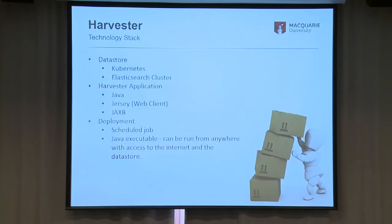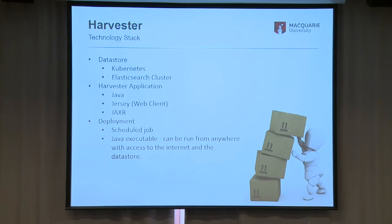Just quickly going over the technology stack I'm using at the moment: the data store is an Elasticsearch cluster sitting on top of Kubernetes — that's a local library setup that we use, and I'm borrowing our Elasticsearch instance for this. The harvester application itself is a Java application — it uses the Jersey web client and JaxB for handling the representations of the data. For deployment, it's a scheduled job and a Java executable, which means it can be run from anywhere as long as it has access to the Elasticsearch data store and the internet.